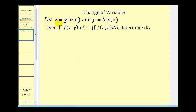Let's say we redefine x and y into the u, v coordinate system, where x is equal to g of u, v, and y is equal to h of u, v. If we have a double integral in rectangular form and we want to convert it to the new coordinate system defined by u and v, we want to determine what differential dA would be equal to. Remember that differential dA represents the area of a small parallelogram in the new u, v coordinate system.